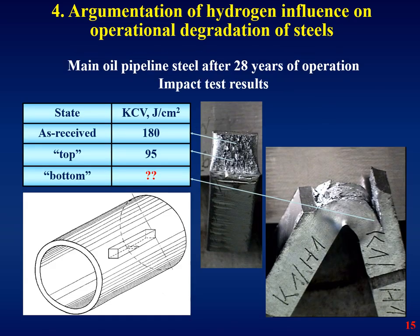Another example: the top and bottom sections of a pipe from an oil pipeline operated for 30 years. Residual water was collected at the bottom of the pipe and formed favorable conditions for corrosion and subsequent hydrogenation of the lower section of the pipe. As a result, steel properties of the pipe bottom were essentially worse compared to its top sections.